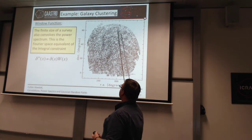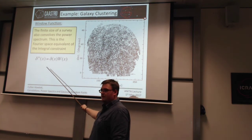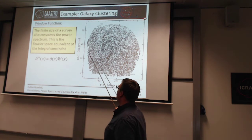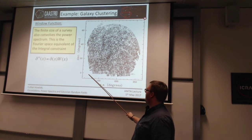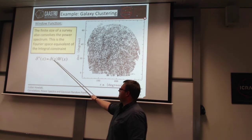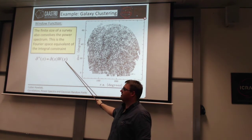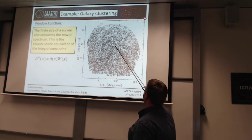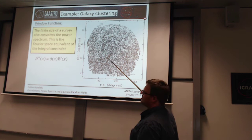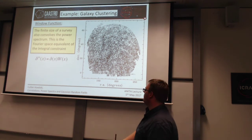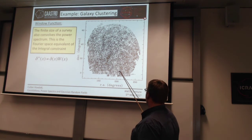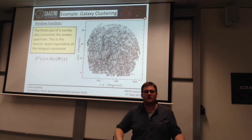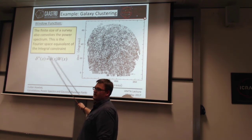Another way of writing the survey mask: in real space, my measured density field equals my true density field multiplied by some window function W(x). Out here, my measured density field is zero — not because the true density field is zero, but because my window function is zero; I have no data there. In some patches of the survey, where you've got data but missed a few redshifts or didn't observe all the galaxies, the window function would be something between zero and one — say 0.5 if you observed 50% of the data. So in real space the survey mask is easy to model.